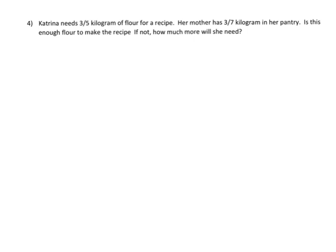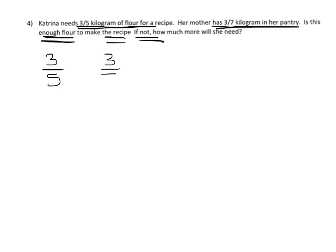Now let's do this problem: Katrina needs three fifths of a kilogram of flour for a recipe; her mother has three sevenths of a kilogram in her pantry. Is this enough, and if not, how much more does she need? We know three fifths is larger than three sevenths because the denominator is smaller, meaning bigger pieces. Three fifths gives three big pieces; three sevenths gives three small pieces.